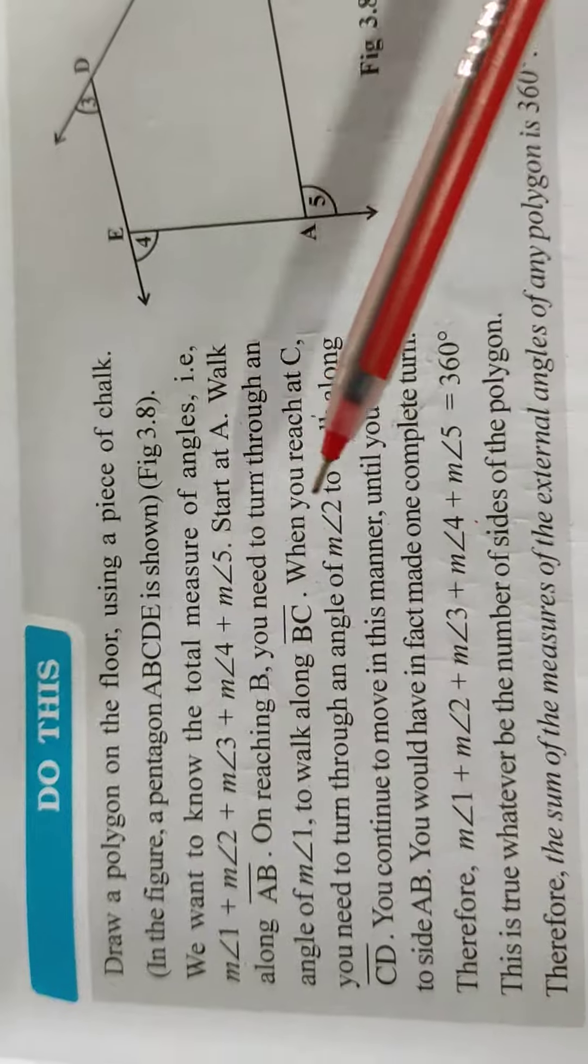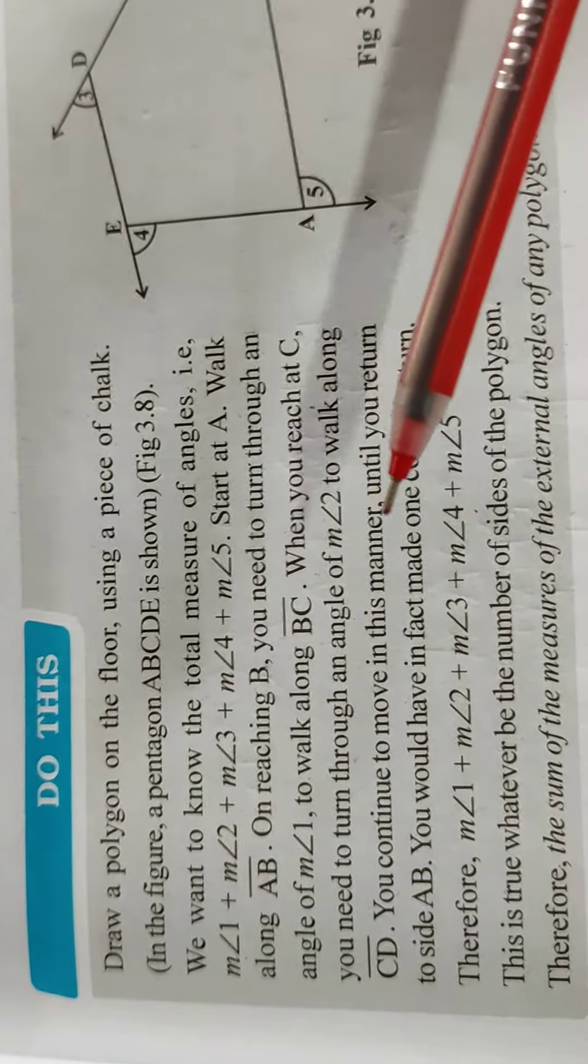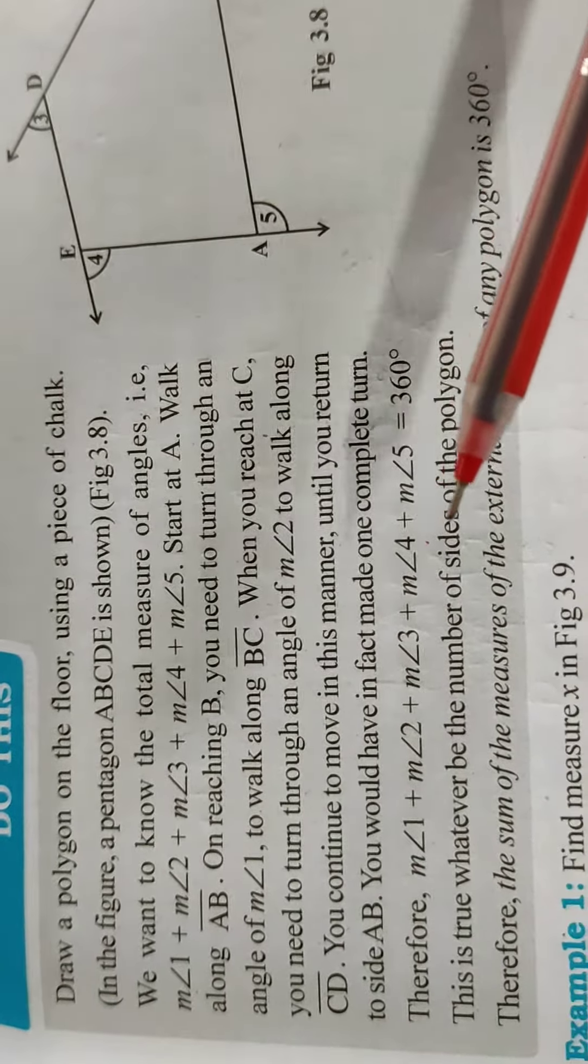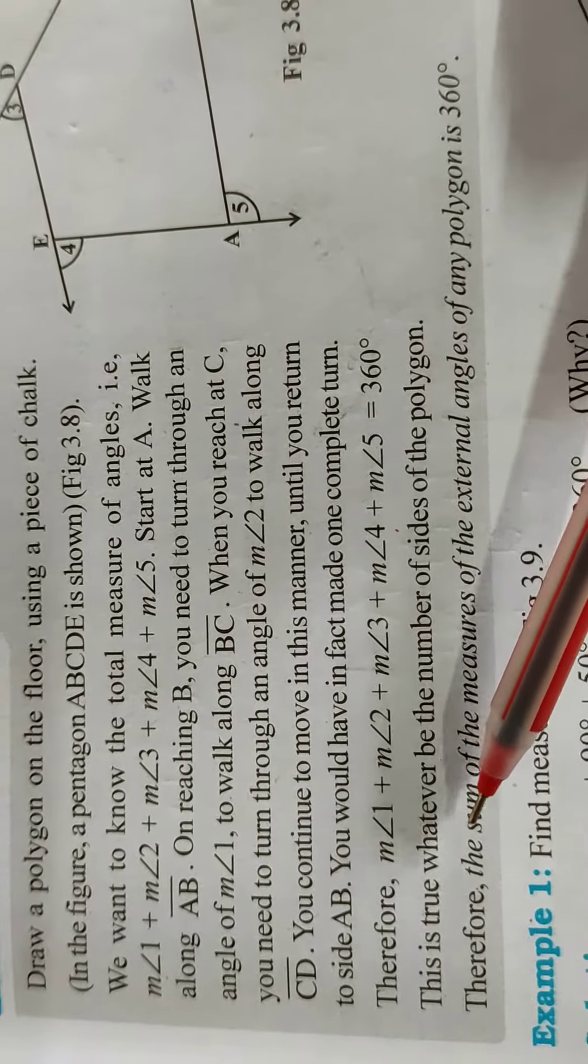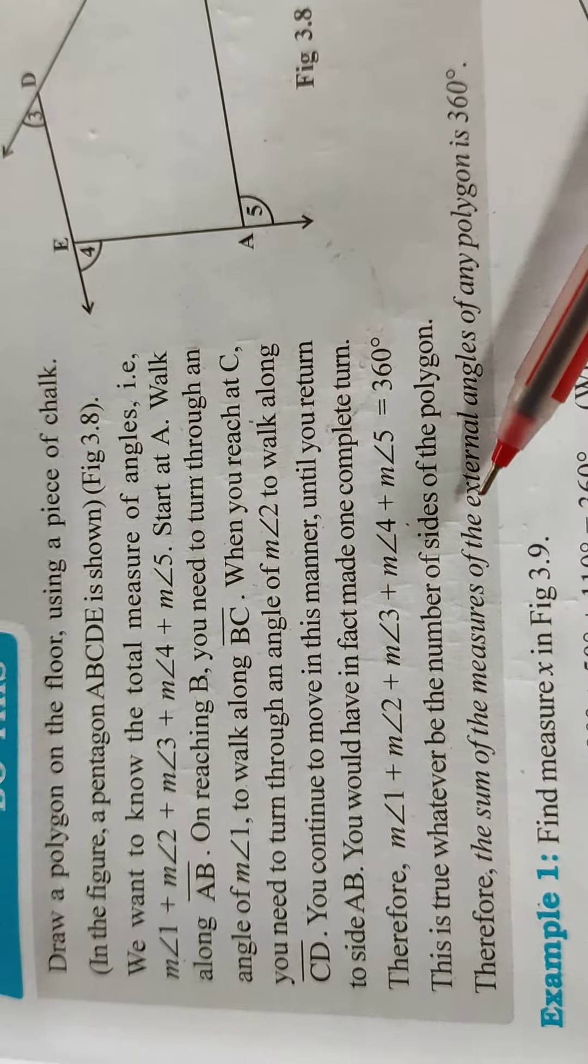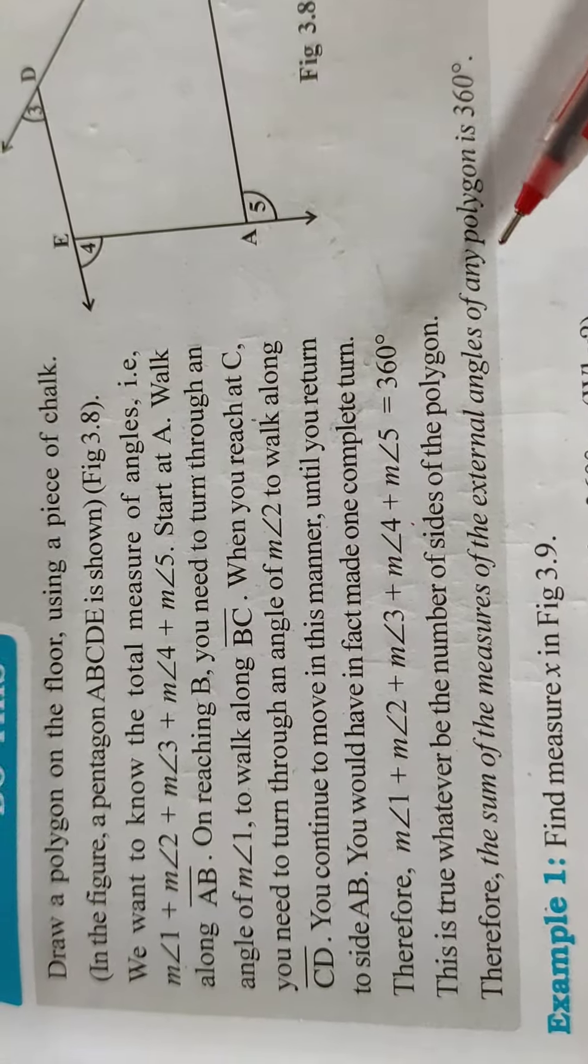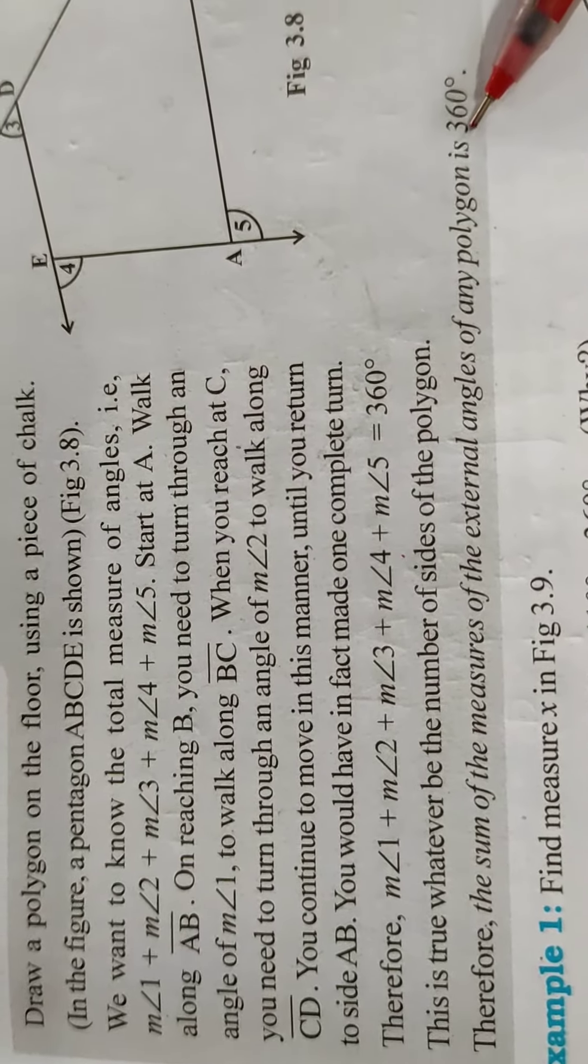Now activity you will read and you will do yourselves. This I am explaining you. The sum of the measures of the external angle of any polygon is 360 degree.